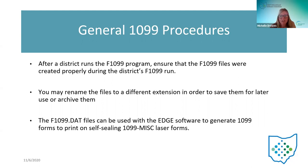You may rename the files to a different extension in order to save and archive them. If you have a procedure that takes those text files, tape file, form file, and DAP file and renames them and archives them somewhere, you certainly can do that. The 1099 DAP file is going to be used with the Edge software to generate the 1099 forms. There's going to be a NEC DAP file and a 1099 miscellaneous DAP file — two separate files because they're two separate forms, and they go into the accountability software separately to print them out.